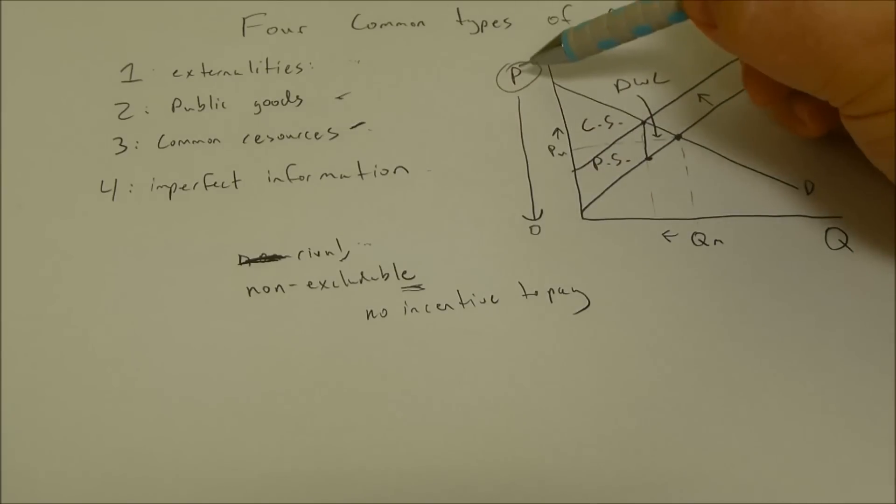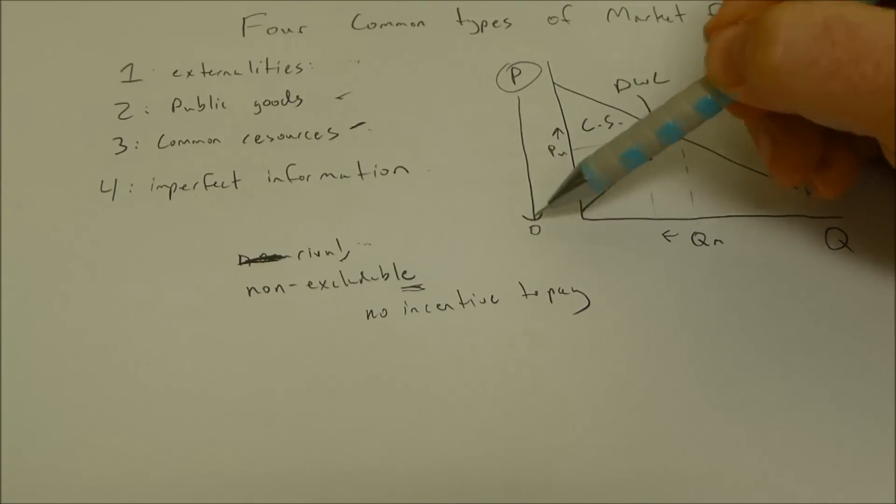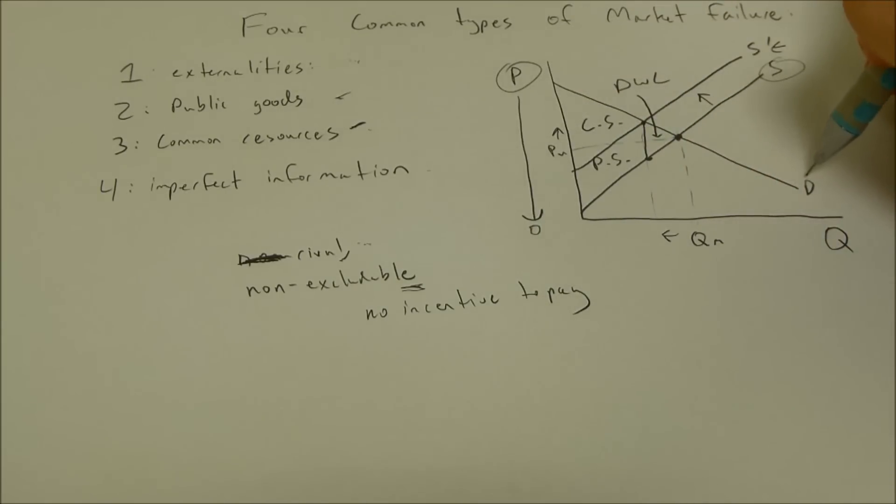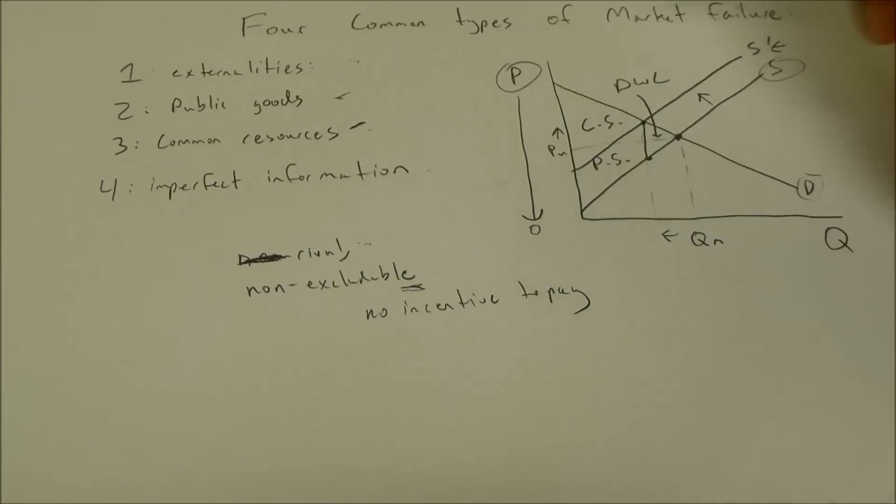So a common resource problem has the same issue with price. It's non-excludable. We see the supply drop to zero. Even though there's positive demand for those products, suppliers won't supply any because there's no price.